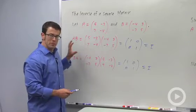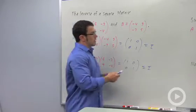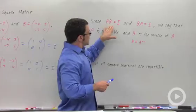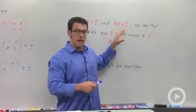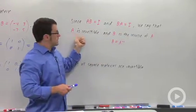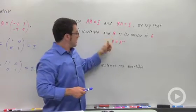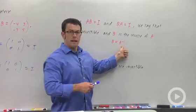There's a special relationship between matrices A and B. Since A times B equals I and B times A equals I, we say that A is an invertible matrix and that B is the inverse of A. And this is how we write it: B equals A inverse.